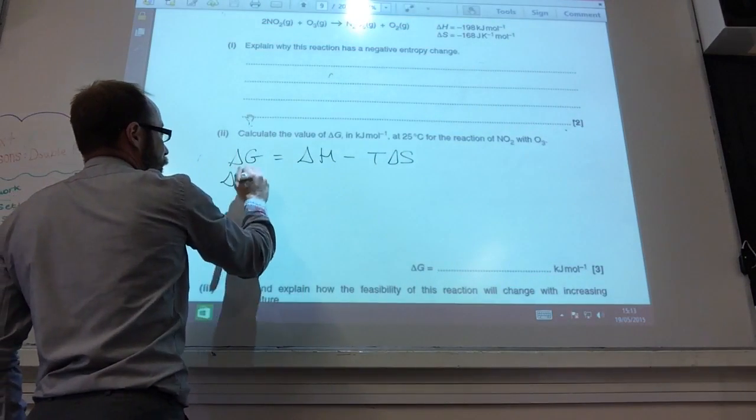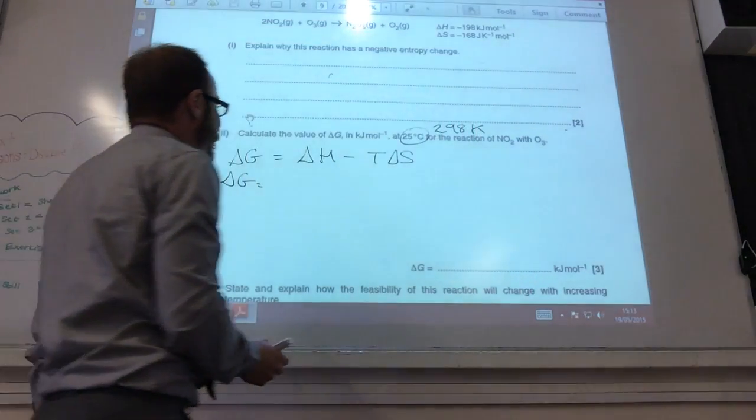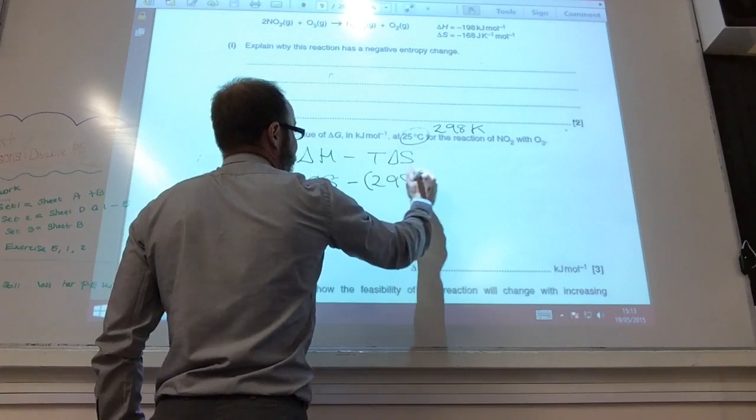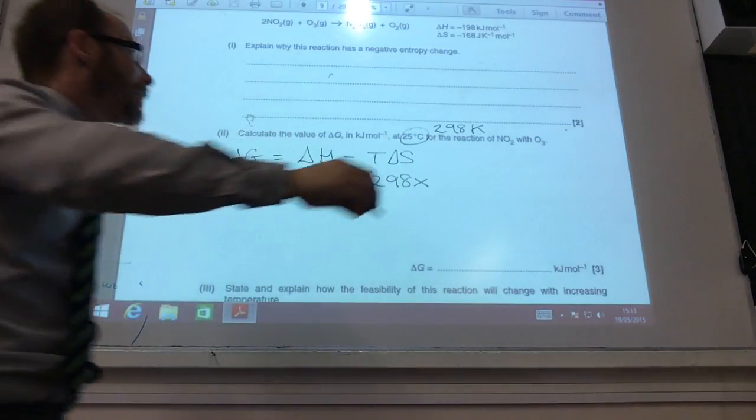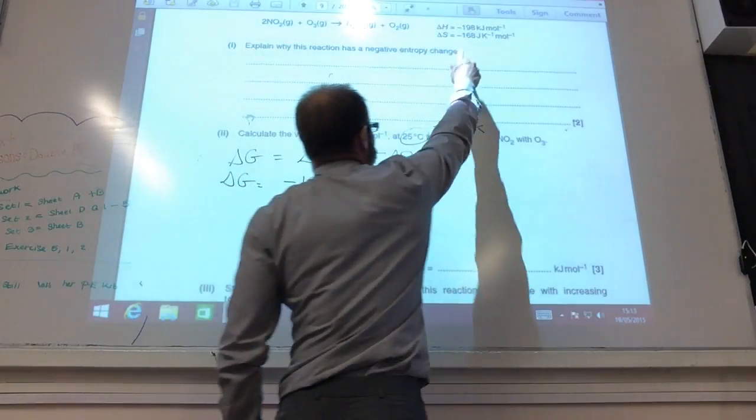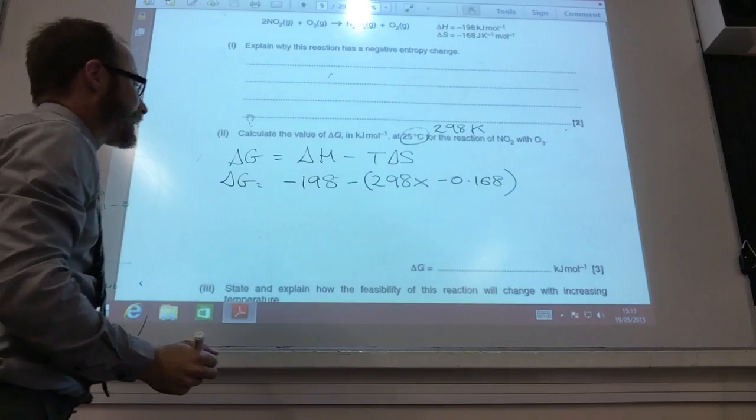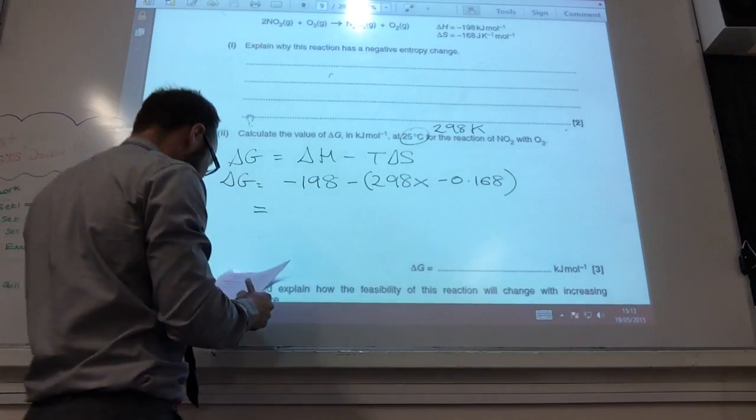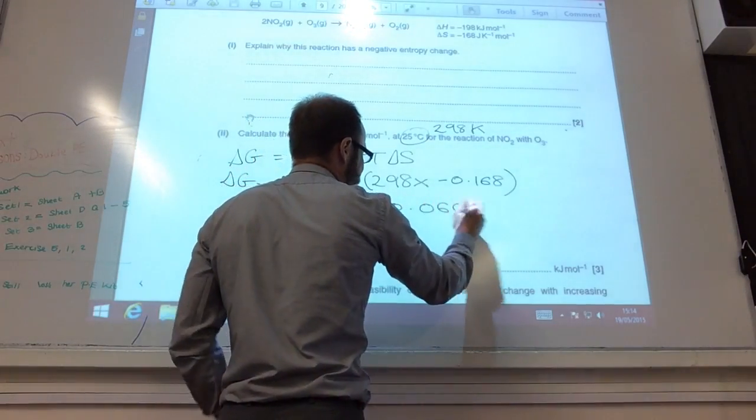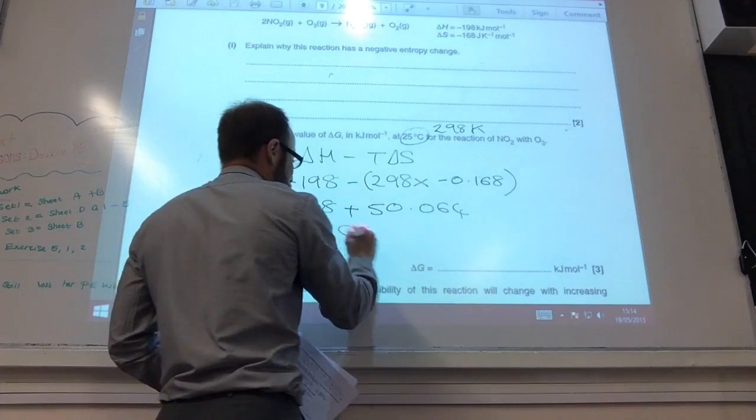Delta G is what they want me to work out. It's at 25 degrees. Obviously, as a chemist, you never use 25 degrees. Automatically, in your mind, you're thinking 298 Kelvin. That equals delta H, which you can work out, minus T, 298 times delta S. But what do you need to do? Delta S is in joules per Kelvin per mole. You've got to convert it into kilojoules per Kelvin per mole. So you need to divide that by 1000, which gives me minus 0.168. If you do that, you end up being minus 198 plus 50.064. Remember, a minus and a minus gives me a plus. So that comes to minus 148.